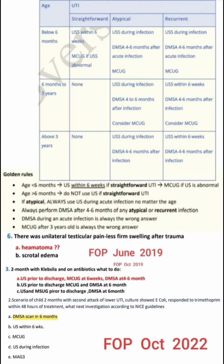Below 6 months with straightforward UTI, we do the ultrasound within 6 weeks. If ultrasound is abnormal, then MCUG. For atypical UTI below 6 months, first ultrasound during infection, then DMSA 4 to 6 months after the acute infection, and the next step is MCUG.